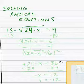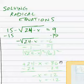Alright, the first thing we want to do is get rid of the 15 on both sides. Which gives us negative square root of 24 minus x equals negative 6.